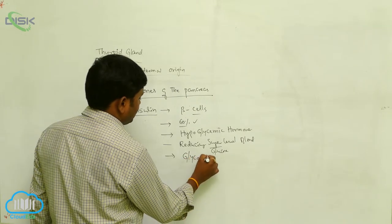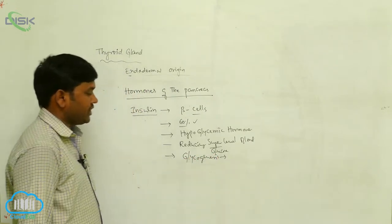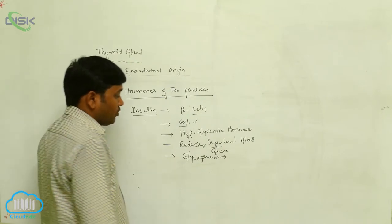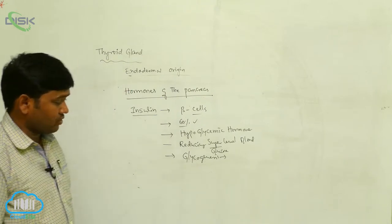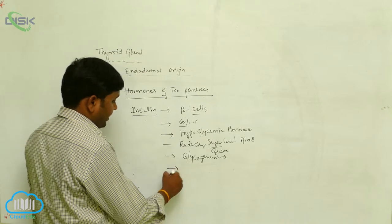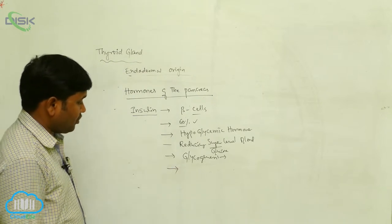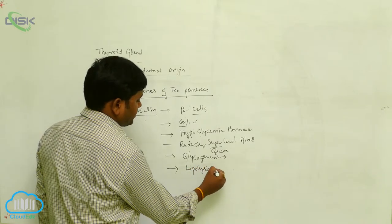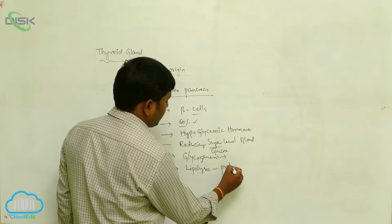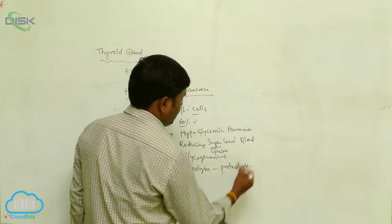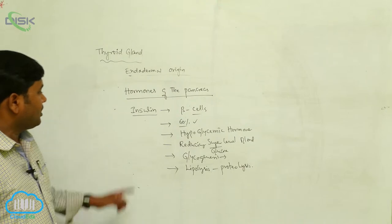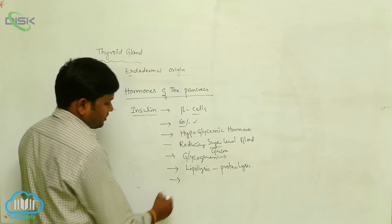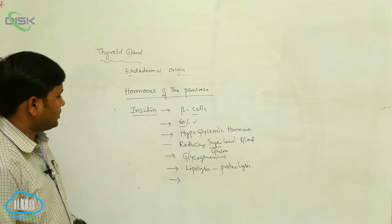Insulin stimulates glycogenesis, which means the formation of glycogen from glucose. It also activates and promotes lipolysis as well as proteolysis, and it inhibits sugar levels in the blood.